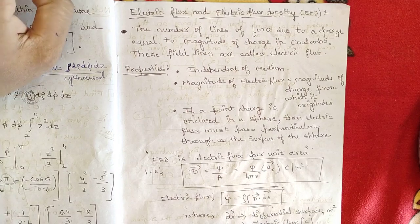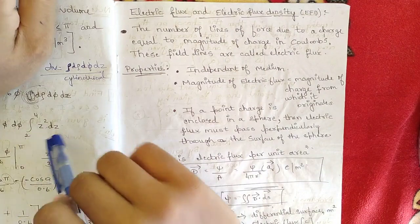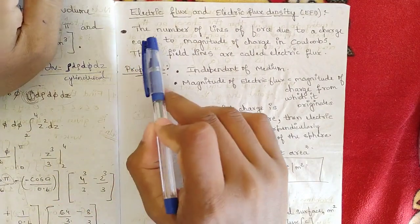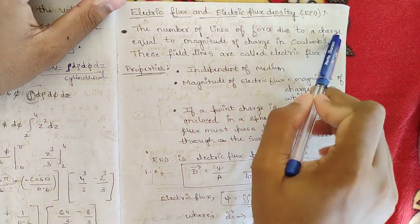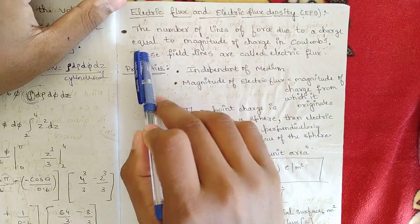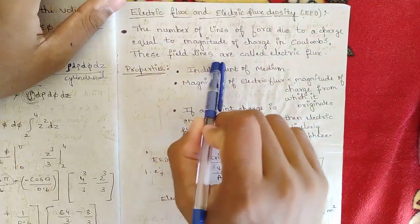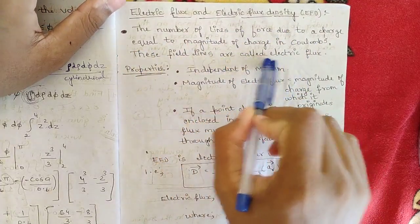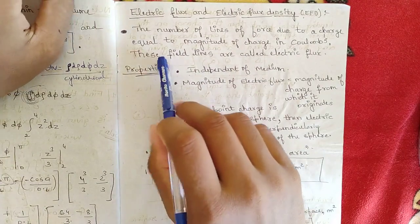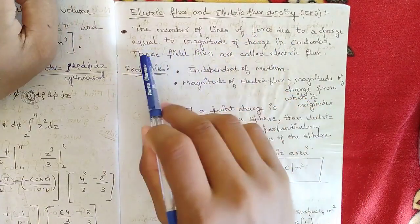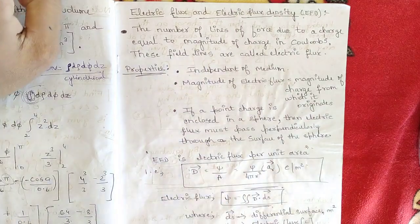Let us now look at electric flux. The number of lines of force due to a charge is equal to the magnitude of the charge in coulombs. These field lines are called electric flux — the lines of force are equal to the magnitude of charge.